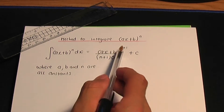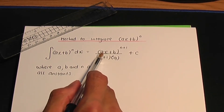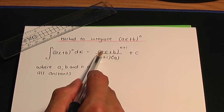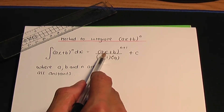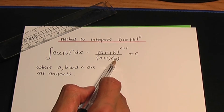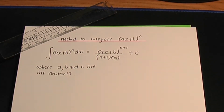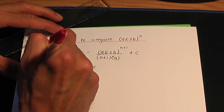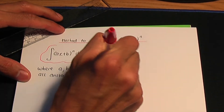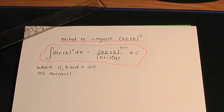So to summarize: add 1 to the power, divide by that result, divide by the derivative of ax plus b — which is a — and then add c if you have an integral without limits. This is the quick result to integrate a linear term to the power of n.